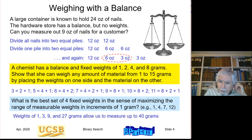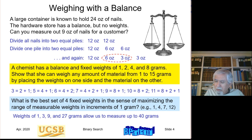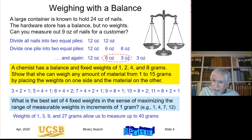The answer is that the weights 1, 3, 9, 27 are the best possible. Notice that the earlier puzzle used powers of 2, whereas here the weights are powers of 3: 3⁰, 3¹, 3², 3³. The maximum amount measurable is 27+9+3+1 = 40 grams, which is much better than the binary case of 15, and better than the ad hoc example of 24.